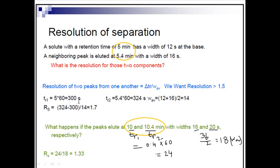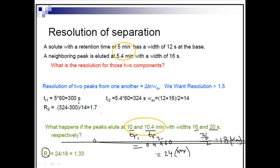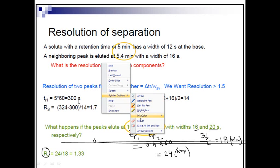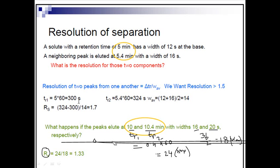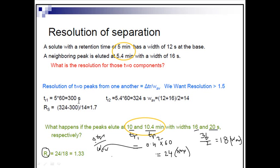We have the difference between tR2 and tR1, which is ΔtR equal to 24 seconds, and the average width W equal to 18 seconds. The formula for resolution is ΔtR divided by W average. So ΔtR is 24 and average width is 18, giving a result of 1.33. That's how the result is obtained.